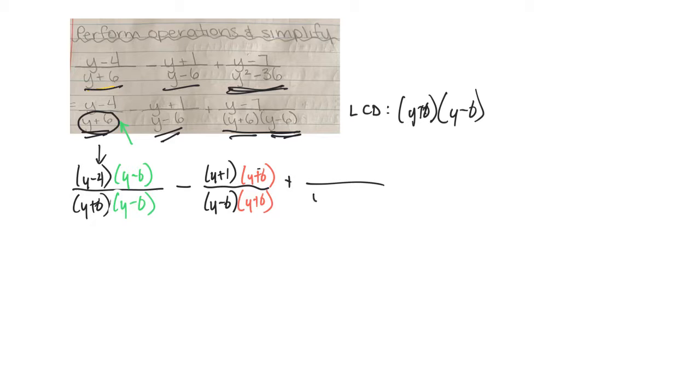Plus, the next one needs to have, oh it has a y plus 6 and a y minus 6 already, so I don't need to touch this one. So on the top this would just stay as a y minus 7.